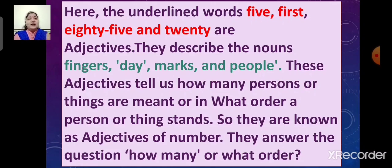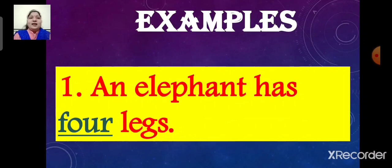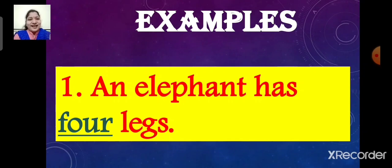An elephant has 4 legs. Here, the underlined word is 4. So the word 4 is an adjective. It describes the noun legs. It tells us how many legs an elephant has. So the word 4 is an adjective of number.